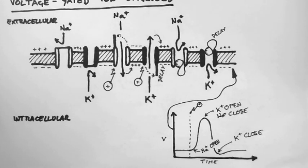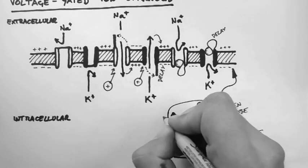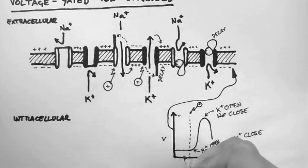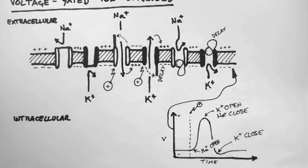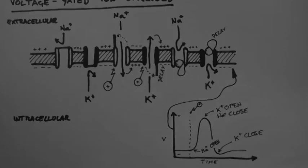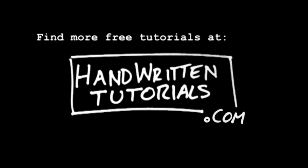This up and down graph shows a typical action potential. In the next video, we will look at how action potentials propagate along a membrane such as an axon. For more free tutorials and the PDF of this tutorial, visit www.HandWrittenTutorials.com